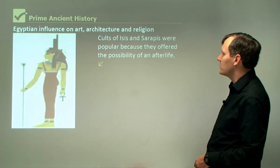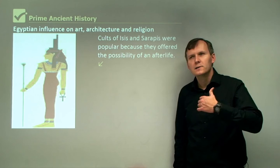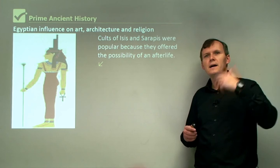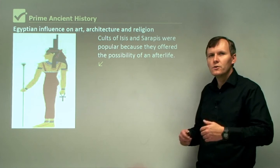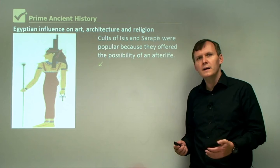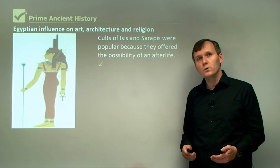The cult of Isis and Serapis were popular because they offered the possibility of an afterlife. In Egyptian religion, they believed you'd be judged and then have a new life, similar to this one but better. Naturally, the idea of worshipping Isis and having a nice afterlife appealed to a lot of people in Rome, which is probably one of the reasons she became popular. There's no doubt there was Egyptian influence in Pompeii, in particular with religion.